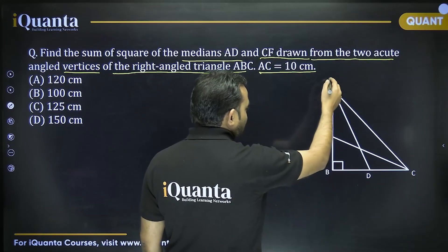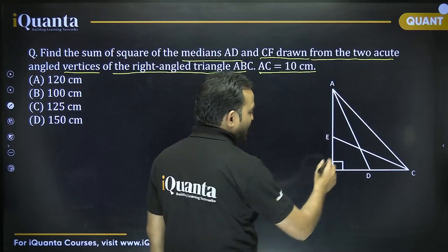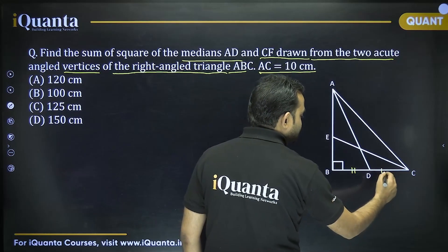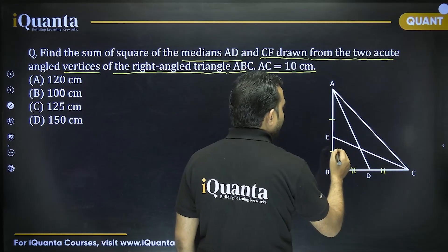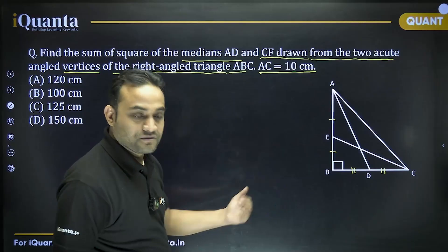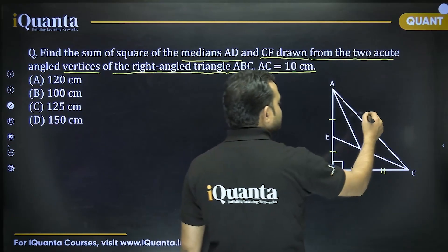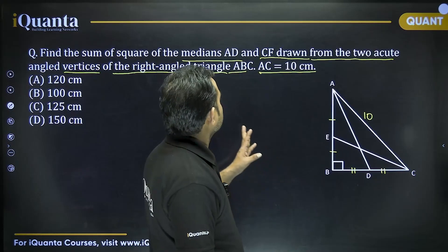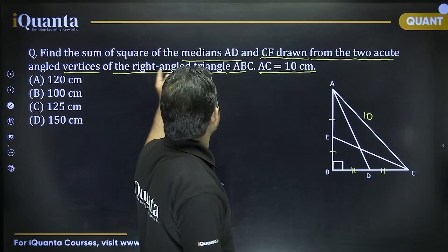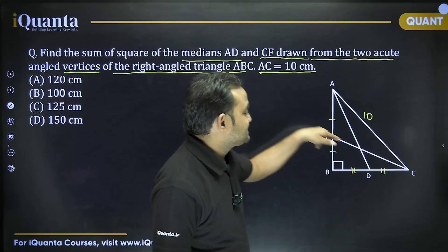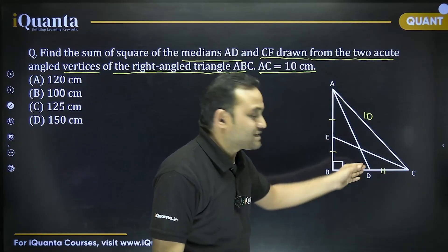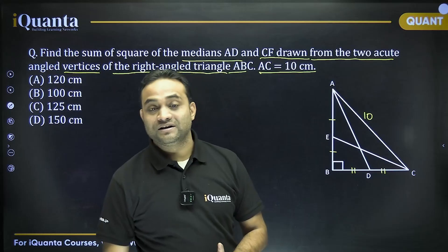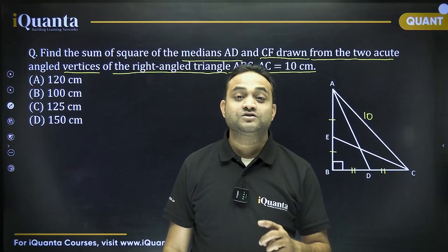Angle A and angle C are the acute angles, so two medians are drawn. BD = DC and AE = EB. AC is given as 10. We need to find CE² + AD². For medians, we use a very important result known as Apollonius's theorem.